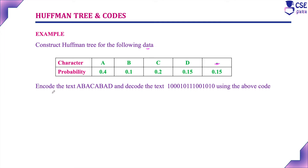We need to encode the text A, B, A, C, A, B, A, D and also decode the given text. So after finding the Huffman code, we have to both encode and decode this given text.